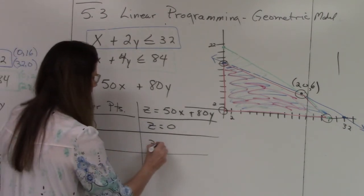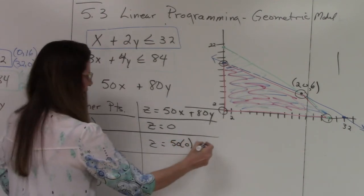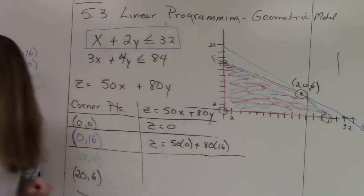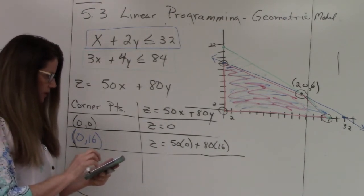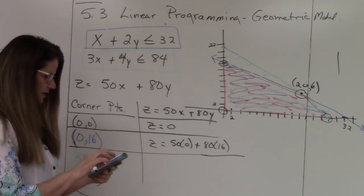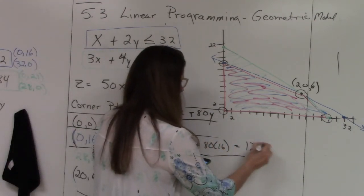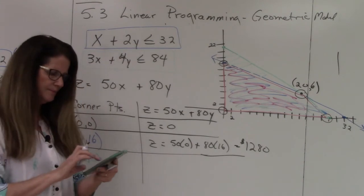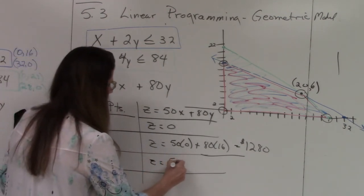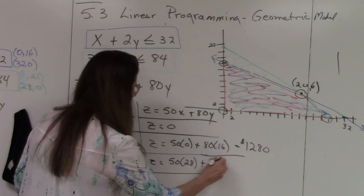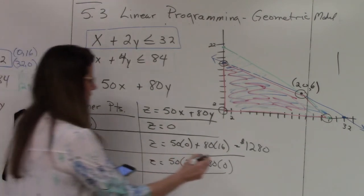When I do 0 and 16, my x value is 0. My y value is 16. And I'm just calculating. So 80 times 16, I'm going to cheat and use my calculator. It's not really cheating. It just makes it go faster. So definitely use your calculator. So 80 times 16. So this, my maximum profit is $1,280. Okay. Now I'm going to do my next corner point. So my z value, x is 28. So I'm going to go 50 times 28 plus 80 times 0. And I'm getting that from here, x and y. So now I'm going to go 50 times 28 equals 1400.